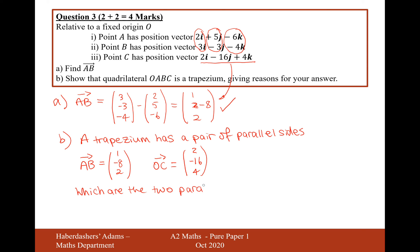And you can clearly see they're parallel because one is a scale factor of the other. But what we've also got to take into account is that for trapeziums, one side must be longer than the other parallel side. Because if the two parallel sides were equal, then that would make a rhombus or a parallelogram.